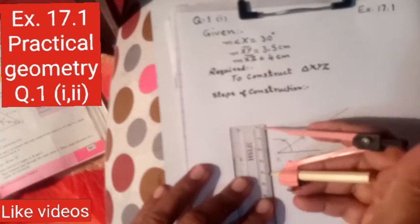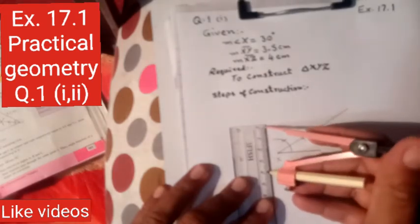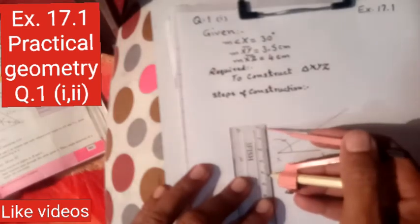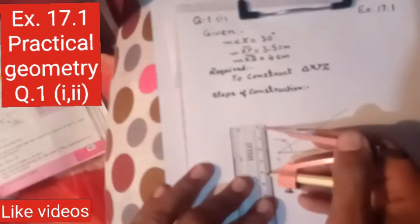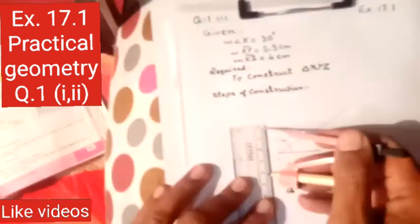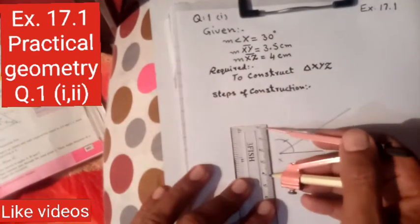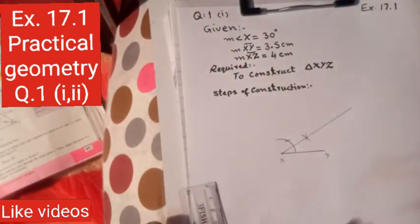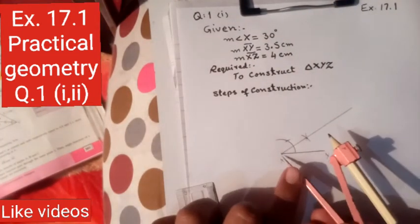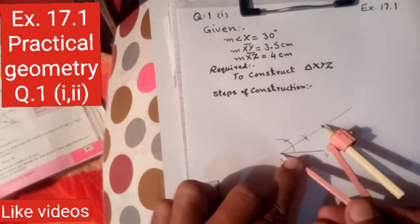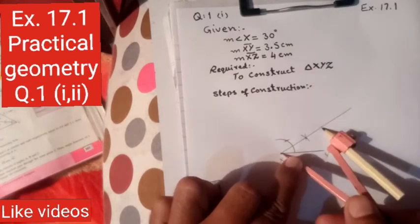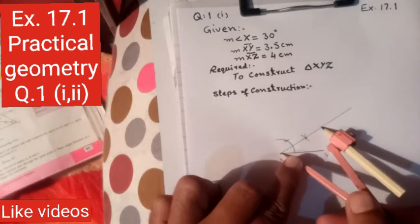Draw the arc exactly. Cut the required 4 cm length on the line from point X. The point at 4 cm from X gives us the required mark on that side.